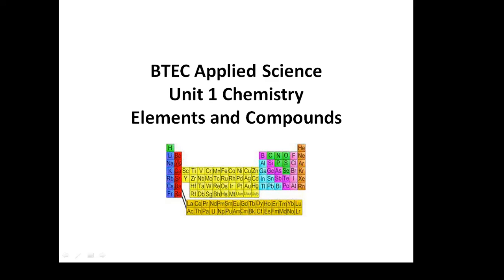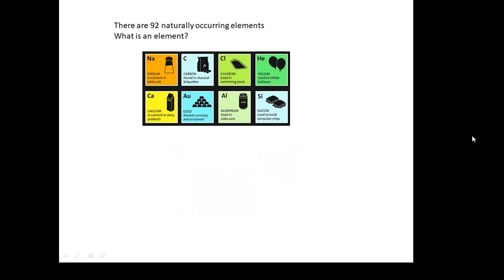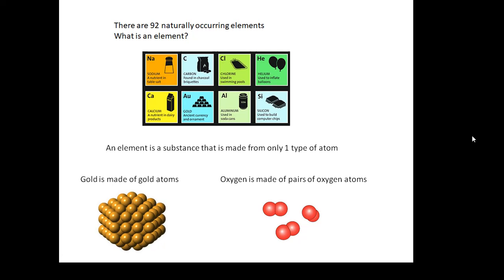BTEC Applied Science Unit 1 Chemistry: elements and compounds. There are 92 naturally occurring elements - ones that occur in nature. What is an element? An element is a substance that's made of only one type of atom.